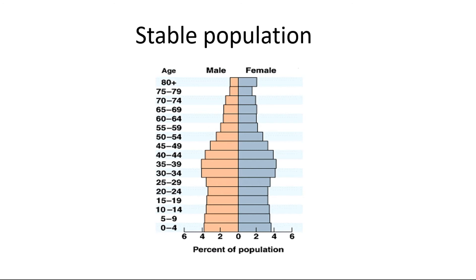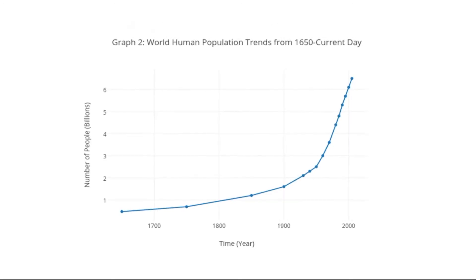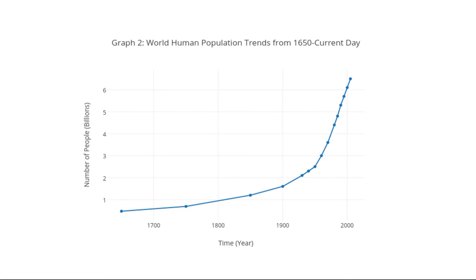Most populations tend to stay stable over time when the birth rate is somewhat equal or close to the death rate. The human population, however, has been on a constant increase — growing exponentially. And unlike most other populations where some environmental factor limits the population to its carrying capacity, through science and technology, humans have been able to limit these environmental factors and decrease the impact they have on population size.